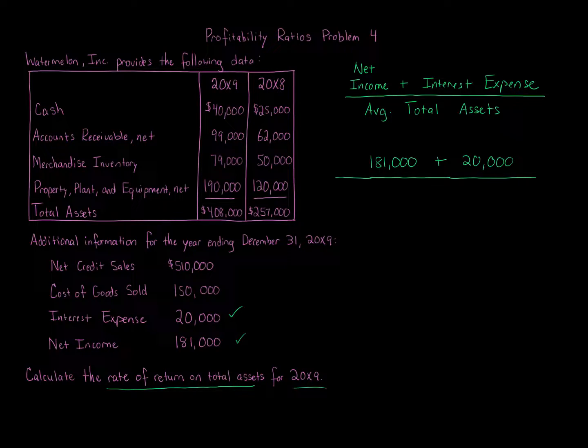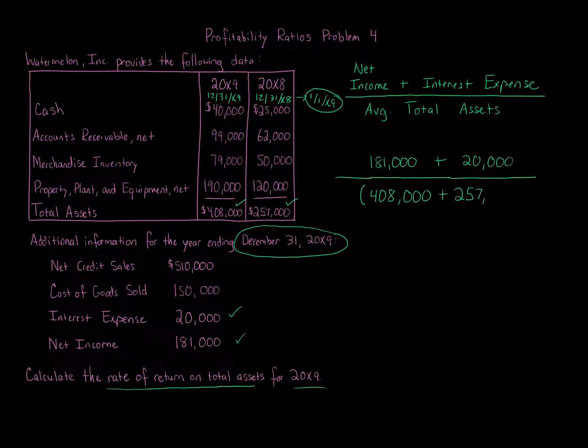Our denominator is going to be the average total assets for 20X9. And if we're looking at one year, we want the December 31st year end, the December 31st 20X9 year end number, and then the January 1st 20X9 number as well. Because everything here is given at the end of the year, December 31st. So this number is December 31st X9, and this is December 31st X8. So where is the January 1st 20X9? Remember, this rolls over to 11X9, so we can use this number. So we're using these two calculations, $408,000 and $257,000, and we're going to average those two numbers together. So $408,000 plus $257,000, and we divide that by two, and that's going to give us our denominator.